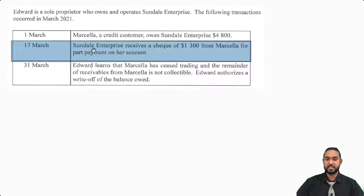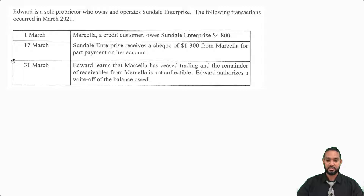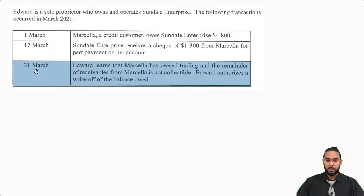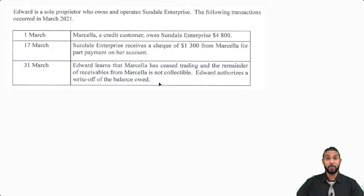On the 17th, it says Sundale Enterprise receives a check of $1,300 from Marcella for part payment in her account. Now that is a transaction — it's an exchange of value between two entities, or a transfer of value from one account to another. On the 31st, Edward learns that Marcella has ceased trading and the remainder of receivables from Marcella is not collectible. Edward authorizes a write-off of the balance owed, so that's the writing off of a bad debt.